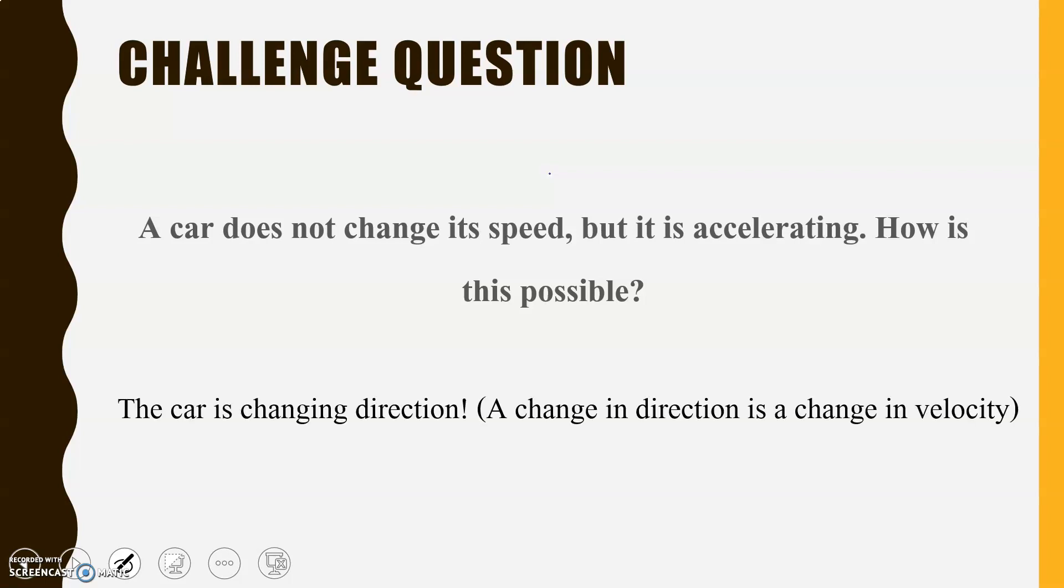Well, as we said before, a car can have that same speed, 20 meters per second, 20 meters per second. But the car can be changing direction. So, a change in direction is a change in velocity, which is also a change in acceleration. So, the car can maintain its constant speed, but change direction, and that's acceleration.